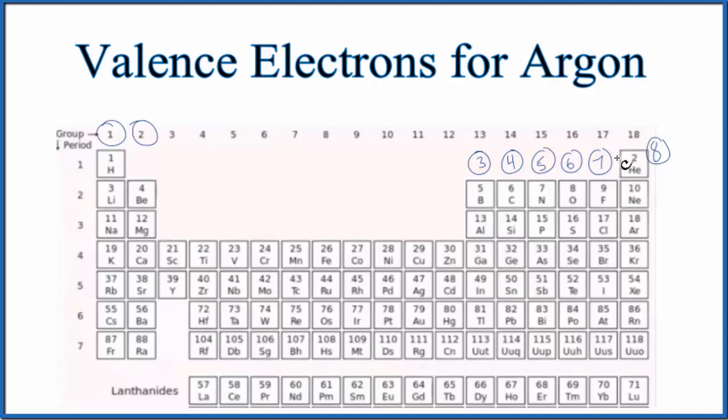The first way is just to look at the periodic table. So right here is Ar. This is our argon. And when we look at this, it's in group 18, sometimes called 8A.